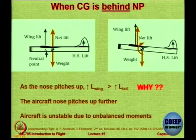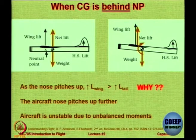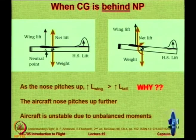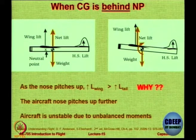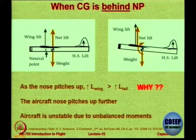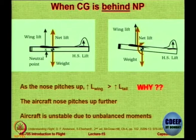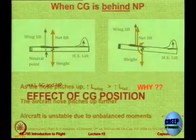So it is very straightforward: the relative location of the center of gravity and the neutral point decides longitudinal stability. If CG is ahead of the neutral point, the aircraft is stable. At the neutral point, neutrally stable. Behind the neutral point, unstable. The further behind, the more unstable; the further ahead, the more stable.